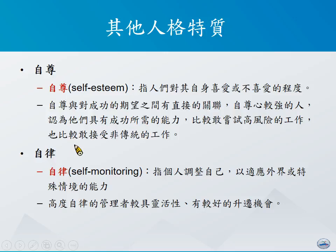自律（Self-monitoring）是另外一个很有用的人格特质，所谓的自律是指个人可以调整自己来适应外界特殊情境的能力。一般来讲，高度自律的管理者会较具灵活性，也会具备较好的晋升机会。原因在于，对于较为自律的人来讲，当他决定出来一件事情该怎么进行的时候，他有能力控制自己，要求自己达到像这样子的状况。